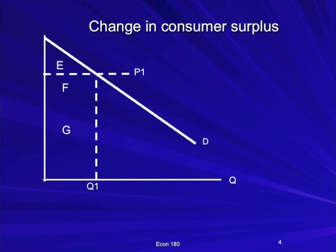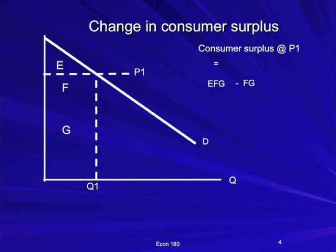We'll often want to think about the change in consumer surplus. At a price of P1, you consume Q1, and the area under the demand curve, E, F, G, is going to be the total willingness to pay. F plus G is how much they had to pay — price times quantity — and so we have area E, which is the consumer surplus. Consumer surplus is typically depicted by this triangle up in the corner, but it's important that you understand where that comes from.